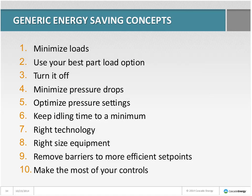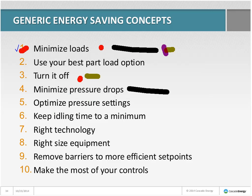Which concepts did the beverage bottling plant take advantage of? Minimize loads — this was all about getting users off compressed air or figuring out how to use less. And right technology — using the right technology to use less compressed air or no compressed air at all.